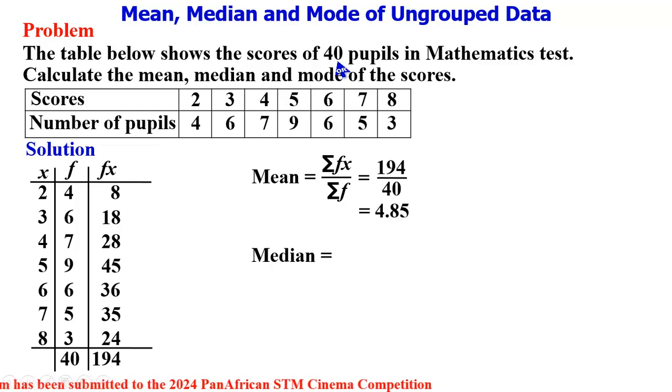For the median, we are meant to divide the number of pupils in the class by 2, and the number of pupils in the class is 40. 40 divided by 2 is 20.